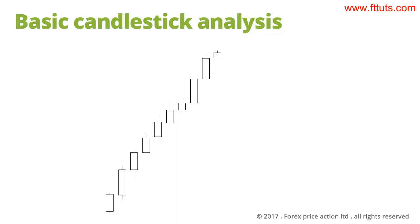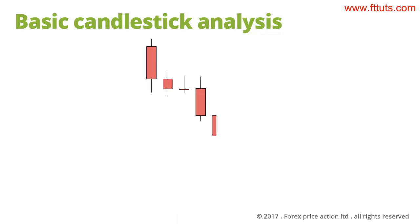Sellers are struggling to drive price down; buyers are struggling to drive price up. This is why when you look at a bearish trend like this one, you're going to notice little wicks pointing up as price drops. These wicks indicate that buyers were struggling for control of price the whole way down. Obviously sellers had control for the majority of the time because price was trending down. However, they did not have complete control — the whole time buyers were fighting hard to regain control, and at some point they will.